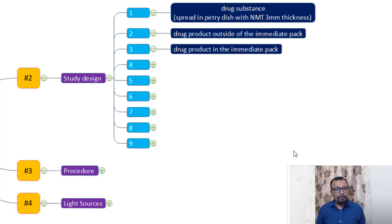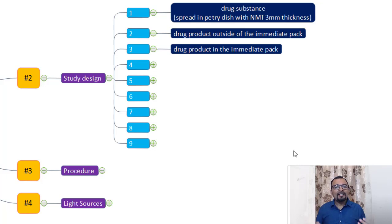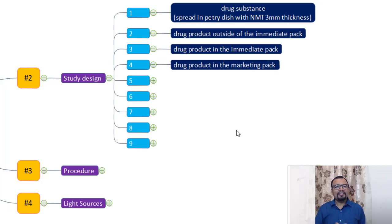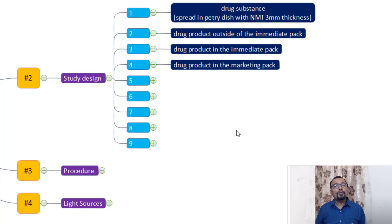The third point is that if needed, you can also charge the drug product with the immediate pack — we will discuss this in the decision flowchart in point number five. The drug product packed into the immediate pack can be charged for the photostability study. Point number four is drug product in the marketing pack or secondary pack. The primary pack is the blister; the secondary or marketing pack can be a carton. You can also choose to expose the drug product inside the carton.